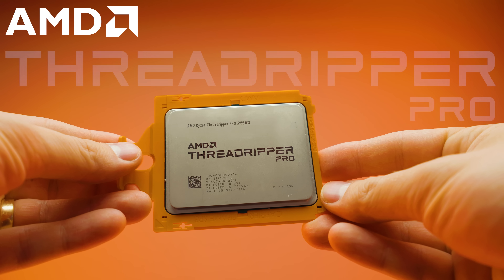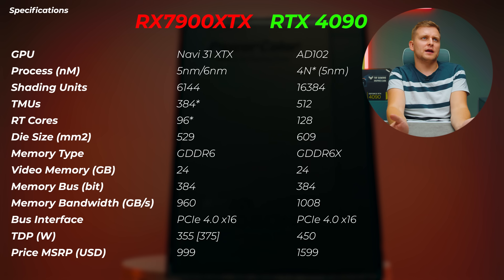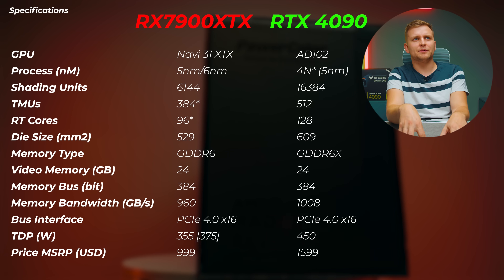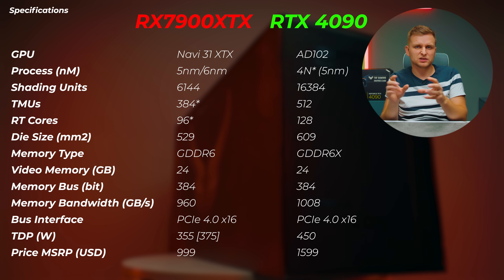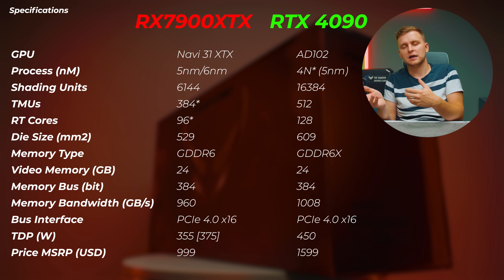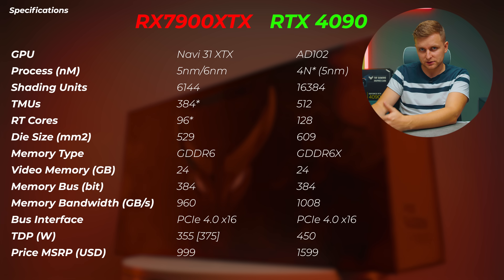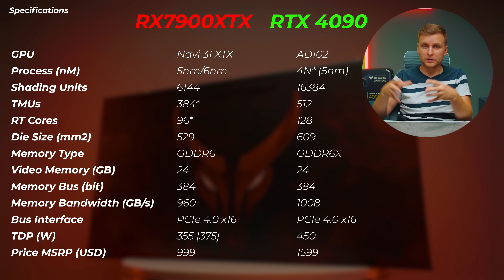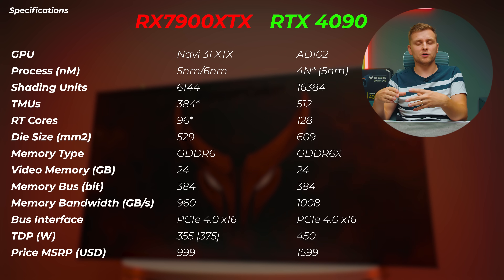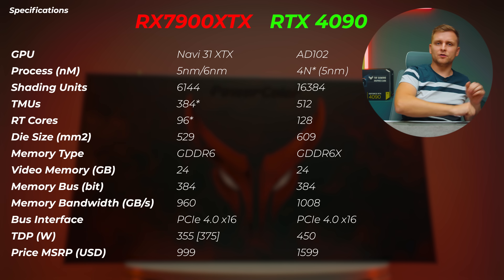Part of this video is sponsored by AMD Threadripper Pro — more about it later. So first, looking at the GPU specs: because AMD uses a chiplet design, they can mix and match different process nodes. For example, the IO die doesn't need the fastest node, so they used a 6nm node for IO, while the compute units and computing power of the GPU are on a 5nm TSMC node.